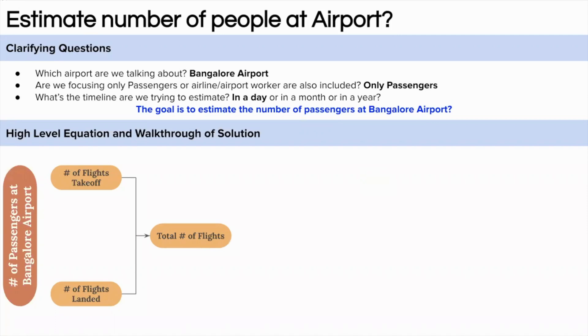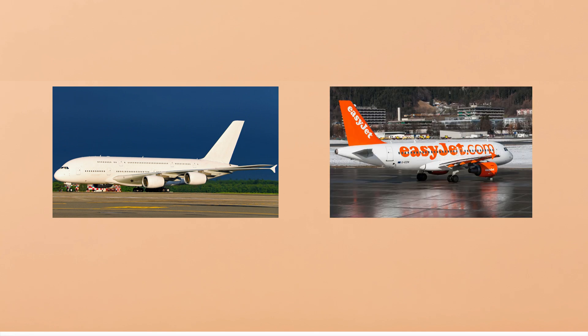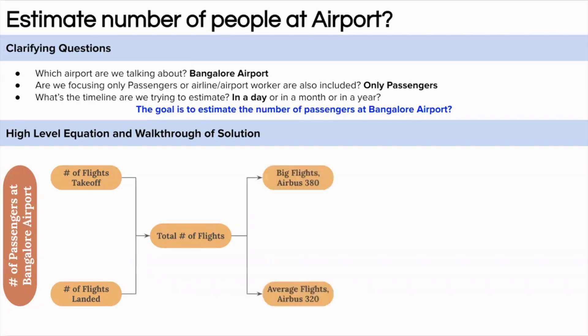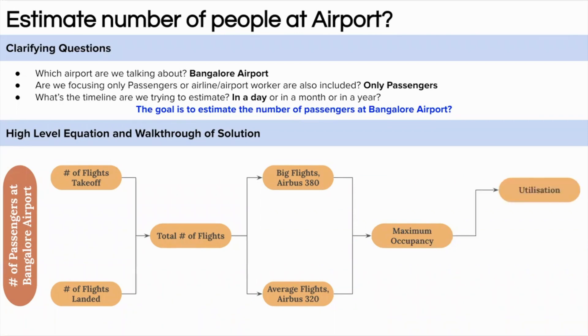Since flights can be of different sizes — international flights are generally bigger with higher seating capacity compared to domestic flights — see this image. The Airbus A380 has higher seating capacity and is used for international flights. On the other side, planes like the Airbus A320 or Boeing 777 are comparatively smaller with lower seating capacity, used for domestic flights. So we need to bifurcate the total number of flights into big and small planes, calculate maximum passengers at 100% occupancy, then apply the average occupancy rate to get our answer.